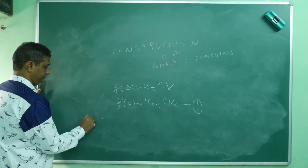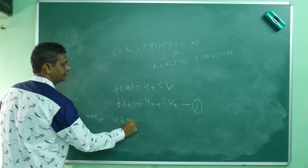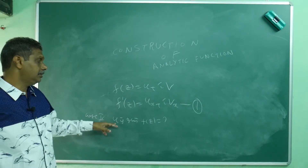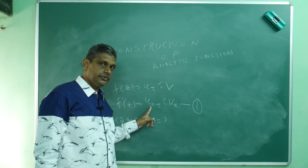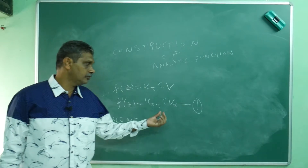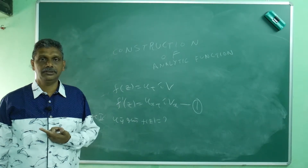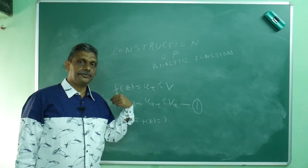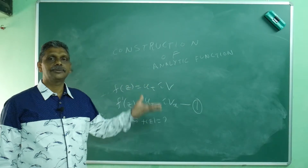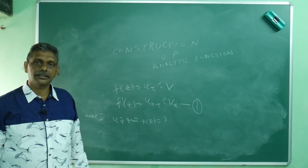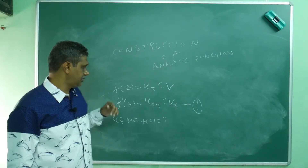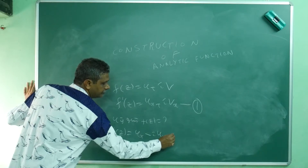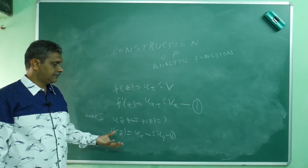Suppose Case 1: u is given. f(z) is analytic so u is known, we can find u_x. For v_x, we use the Cauchy-Riemann equations: v_x = -u_y. So we can write everything in terms of u. When u is given, f'(z) = u_x - i·u_y.